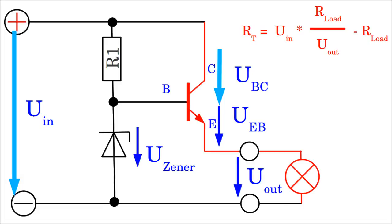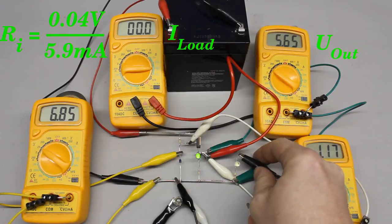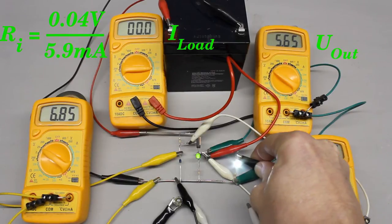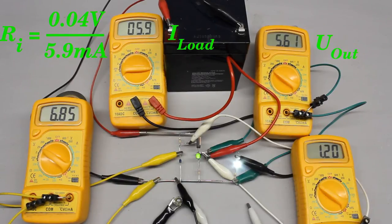The circuit is called a linear regulator, because there is a linear correlation between the resistance of the transistor and the input voltage. A high quality linear regulator acts like an ideal voltage source with nearly no inner resistance.